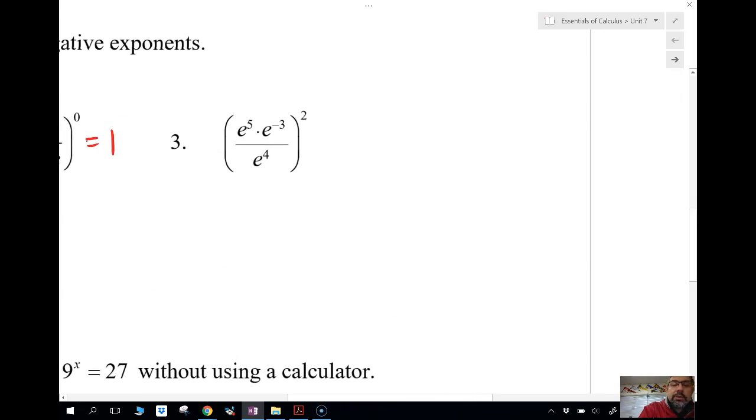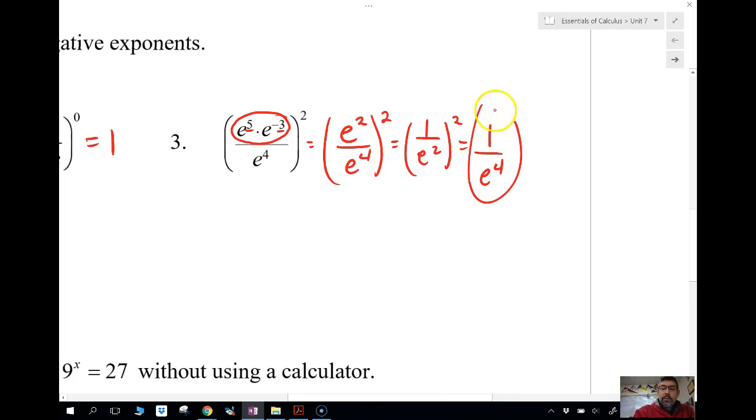This one we're going to simplify out. So what we're going to do here is I'm going to combine these two by adding the exponents. So I'm going to have E to the squared over E to the 4th squared. Then I'm going to subtract these exponents. And since I want this to all have positive powers and no negative, I'm going to subtract 2 from the 4, and I'm going to have 1 over E squared, squared, which is 1 over E to the 4th.